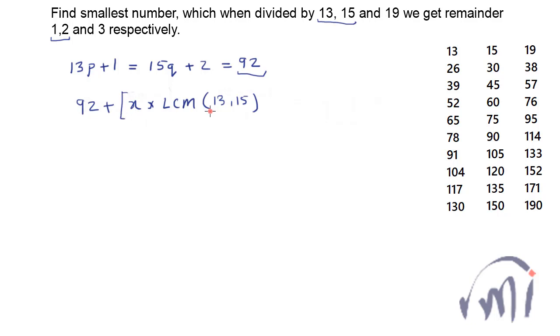That means 92 is the smallest number which is satisfying this condition for 13 and 15. And after that if you add a number which is multiple of both 13 and 15 which will be of this form LCM of 13 and 15 multiplied by x and you add 92 to that number, that number will also follow this particular condition. So this number will actually be in the form of 92 plus and since 13 and 15 are co-prime numbers their LCM will be the product of 13 and 15.